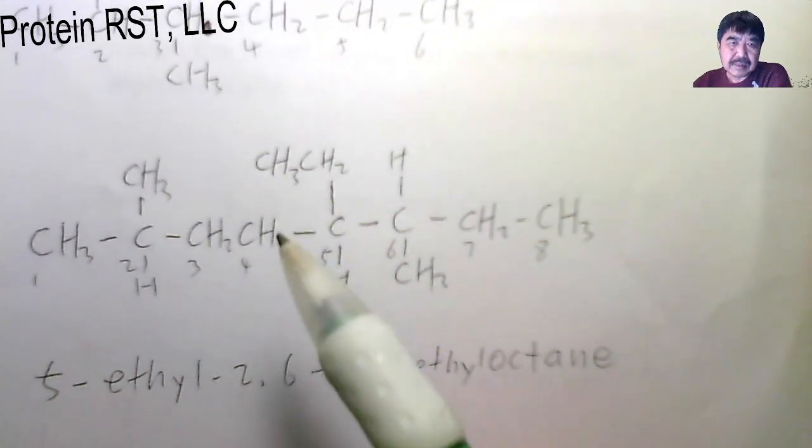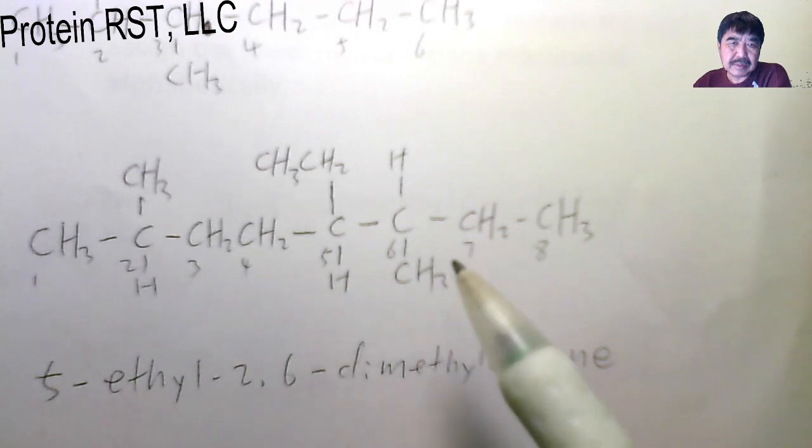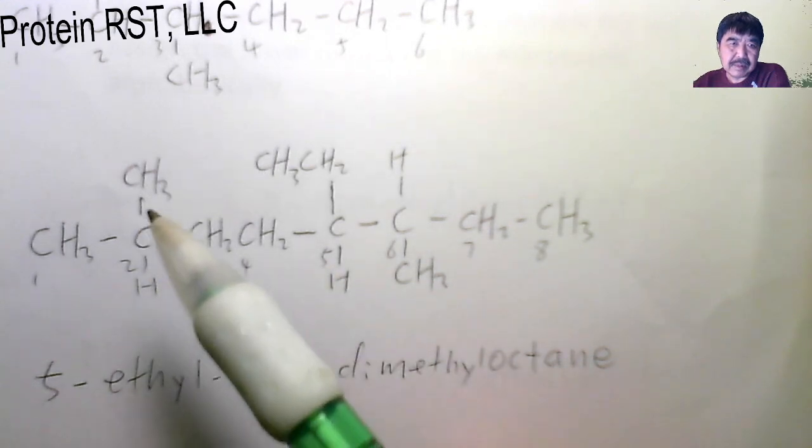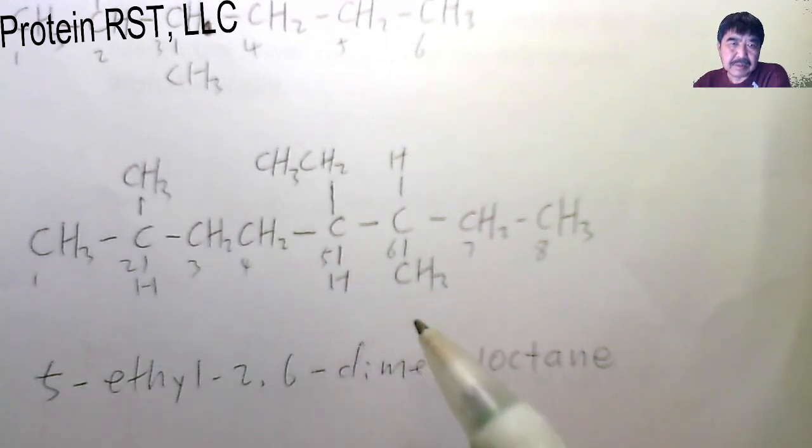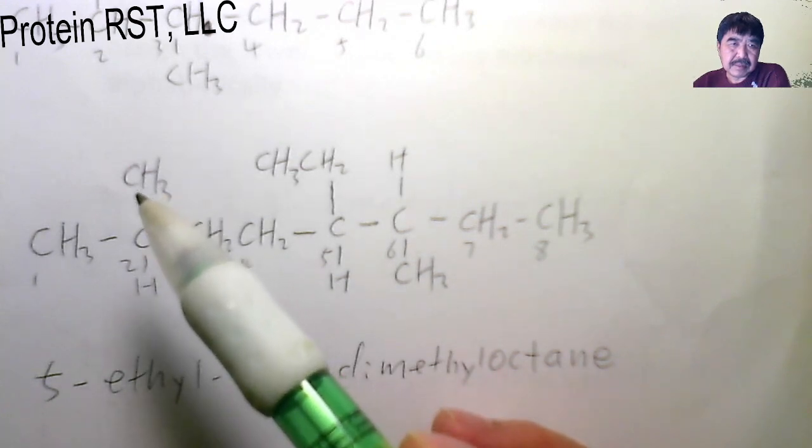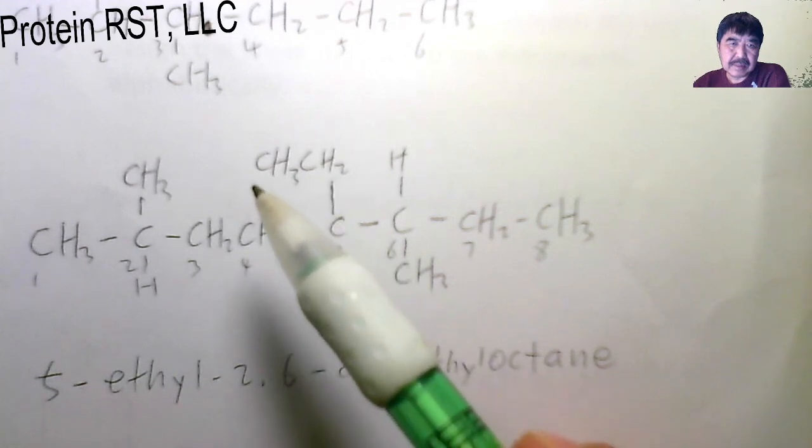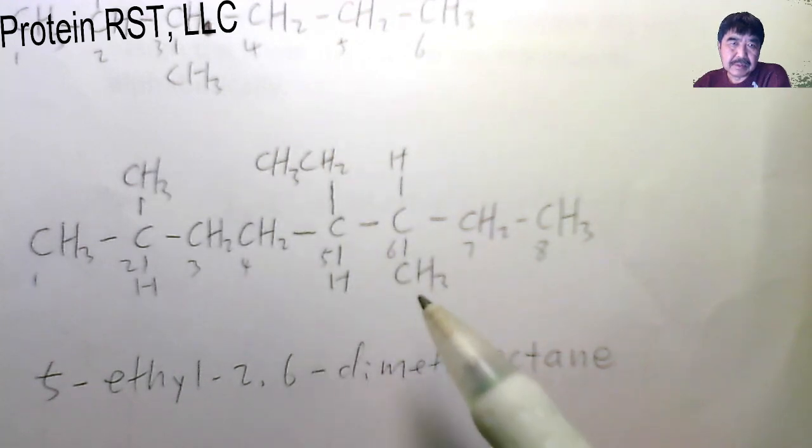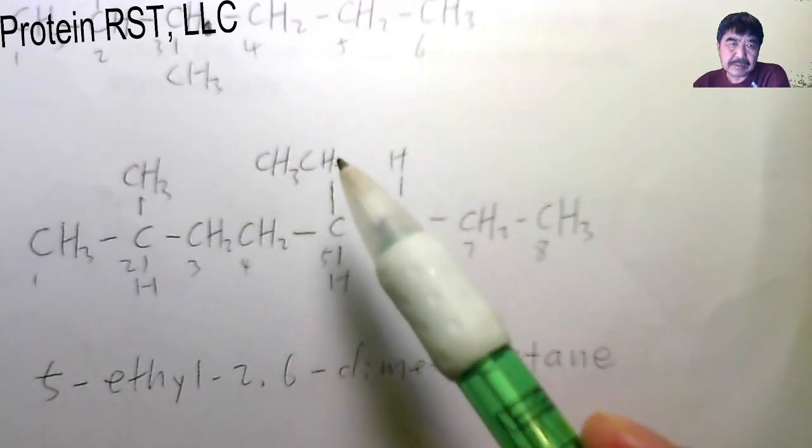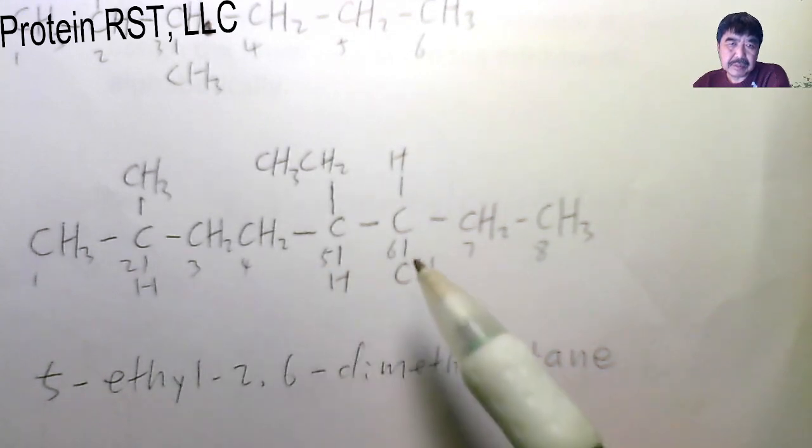Next, take a look at this one. This parent chain has eight carbons, so they're called octane. Take a look at the side chains, the branches. At two position, there's a methyl group. Five position, there's an ethyl group, and six methyl. So this molecule is called 5-ethyl-2,6-dimethyl octane.